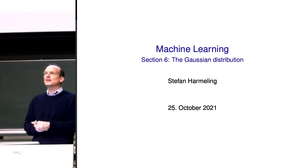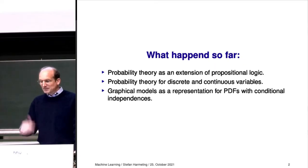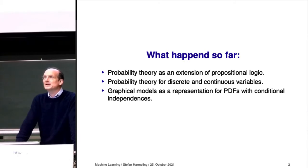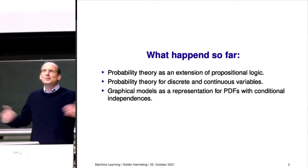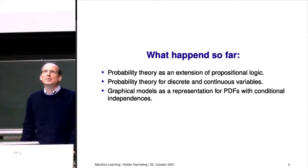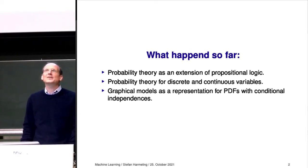The Gaussian distribution has a lot to say about it because it has really nice properties, and we will see why. But before that, let's have a very brief look back at what we've done so far. We talked about probability theory as an extension of propositional logic — a pretty introduction to probability theory that's different from what you may have learned in math classes. It's a different point of view on probability, and I think it's very useful.